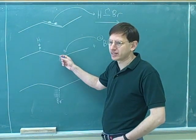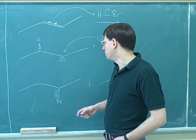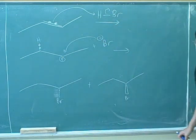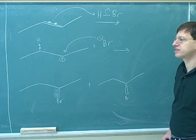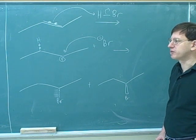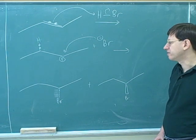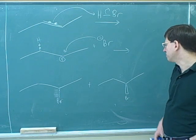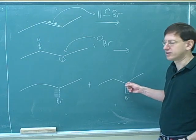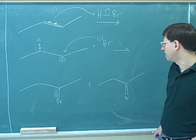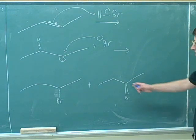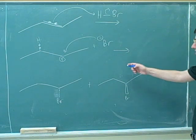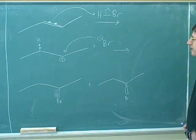Here we're attacking a carbocation, so we expect to get two different products. What you have to start doing is get into the habit of asking: am I forming a stereocenter? And if you are, you have to ask how many products there are and draw all of them. So we've got these two products, and besides the stereochemistry issue, you've got the exact right products.